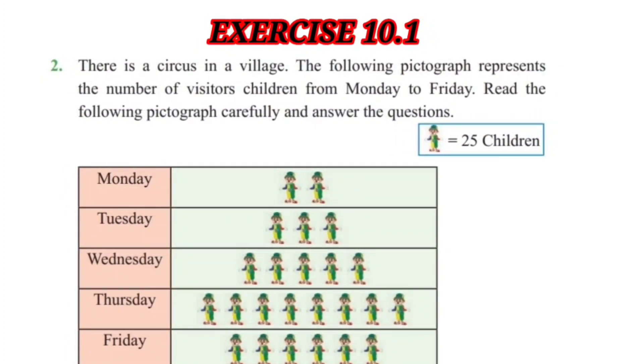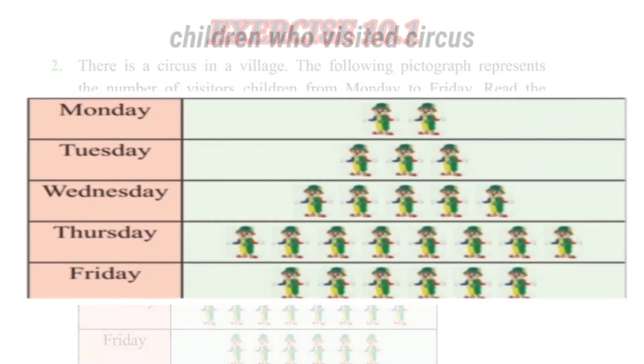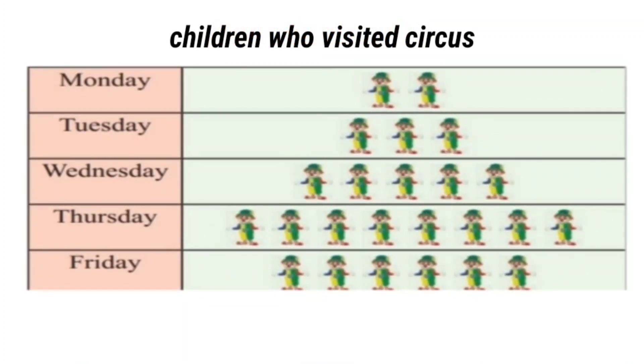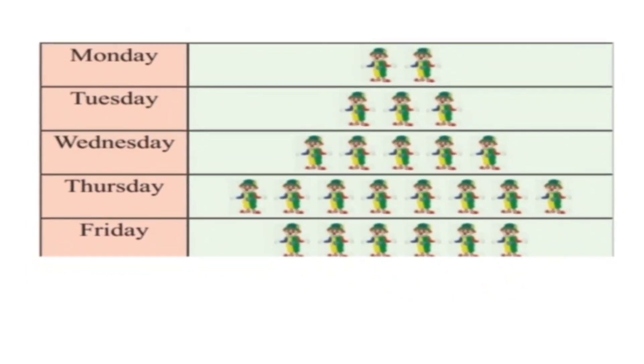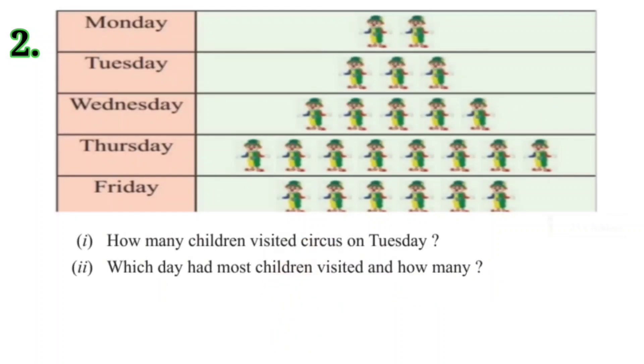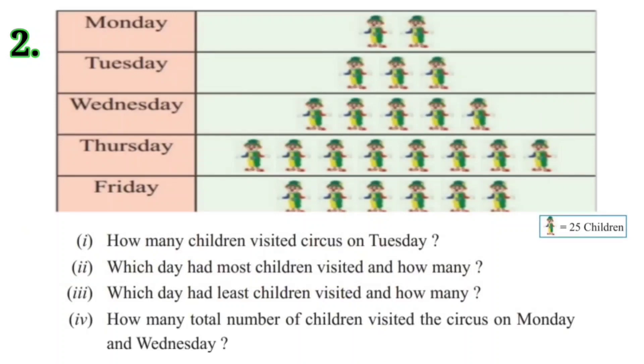Now, let us solve question number 2 of exercise 10.1. Here, we are given a pictograph which represents number of children who visited circus from Monday till Friday. And we are also given a scale where 1 joker is equal to 25 children. Based on this picture graph, we will answer the following questions.